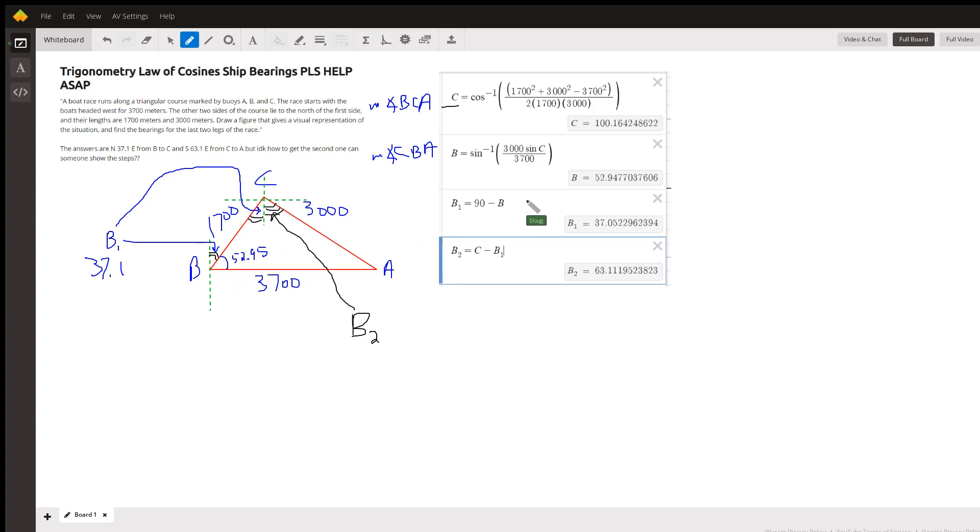Angle B is 52.95 degrees, and that allows us to find the bearing of C from B: north 37.1 degrees east, because that's B₁ right there.